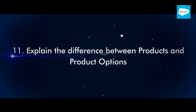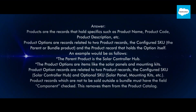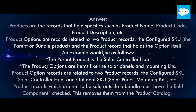Question 11: Explain the difference between products and product options. Products are the records that hold specifics such as product name, product code, product description, etc. Product options are records related to two product records: the configured SKU (the parent or bundle product) and the product record that holds the option itself. For example, the parent product is the solar controller hub, and the product options are items like the solar panels and mounting kits. Product records which are not to be sold outside a bundle must have the field 'component' checked, which removes them from the product catalog.